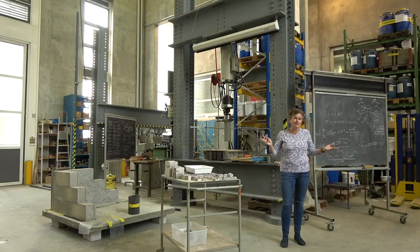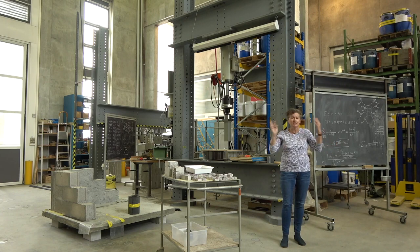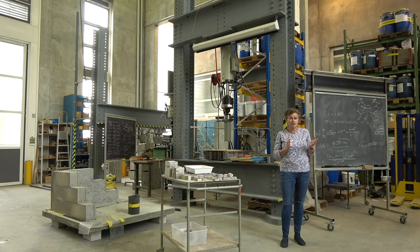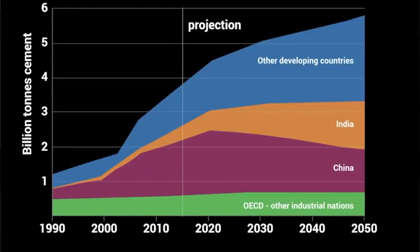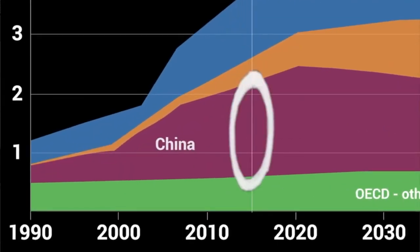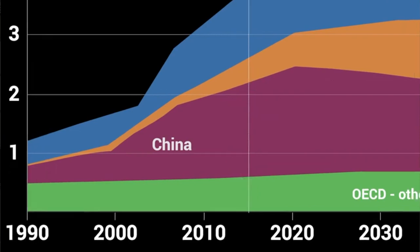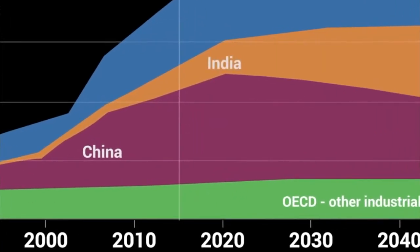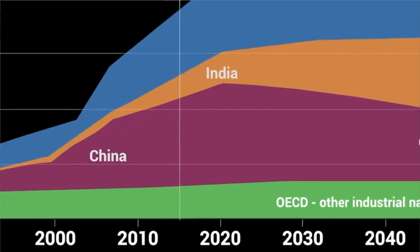CO2 doesn't stay where it's produced — it goes everywhere. So our glaciers are melting here in Switzerland due to CO2 produced in China and India, and if we want to have an impact then we have to work on things that can be done in other countries as well as Switzerland.